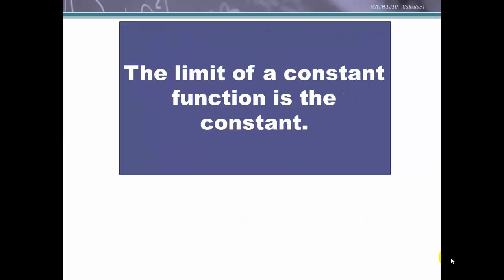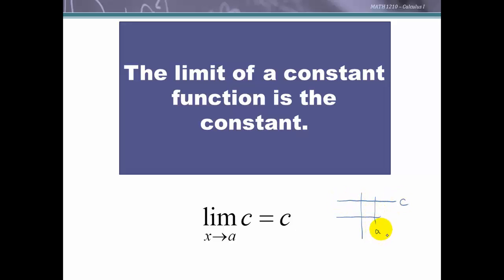The limit of a constant function is the constant. This is fairly intuitive graphically — a constant function is a horizontal line, so whatever value of a we choose, as we approach a we always stay on that constant value. Therefore the limit of c equals c.